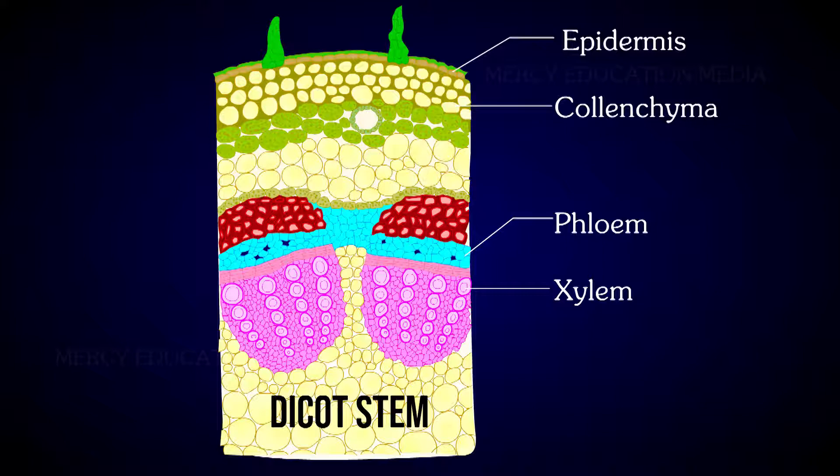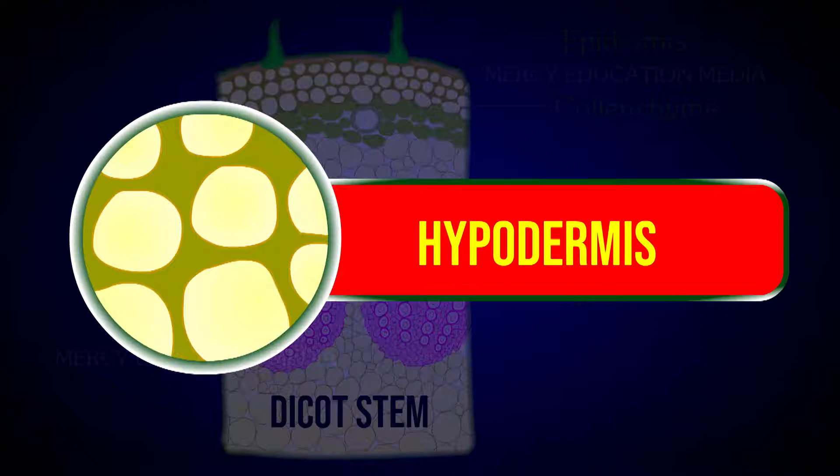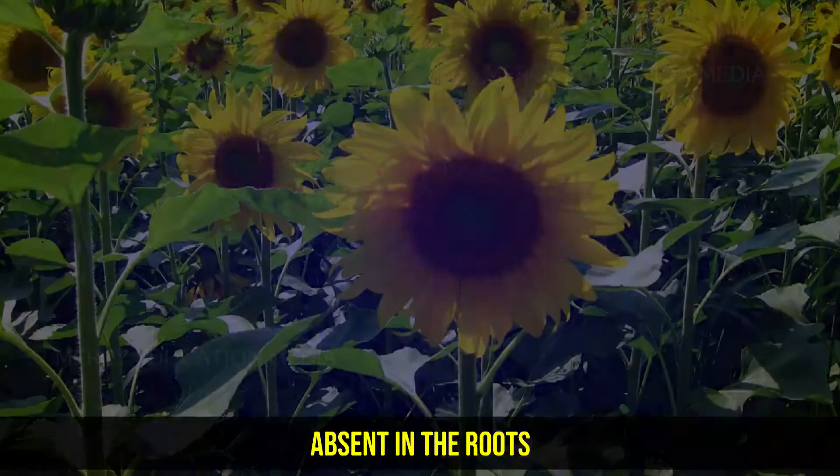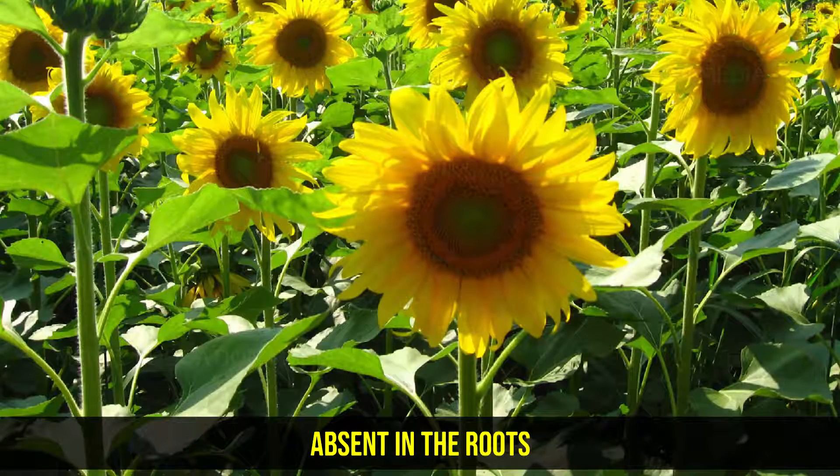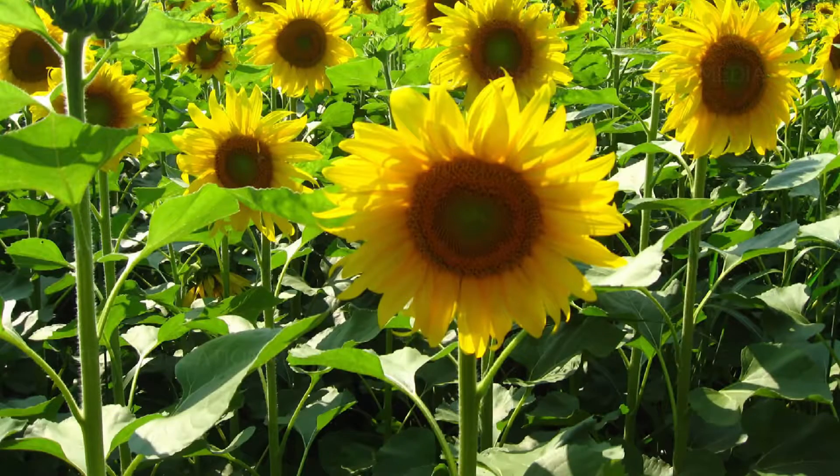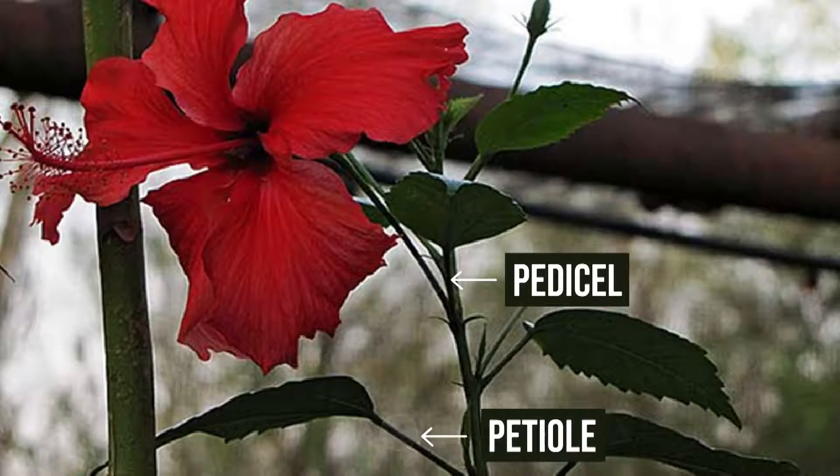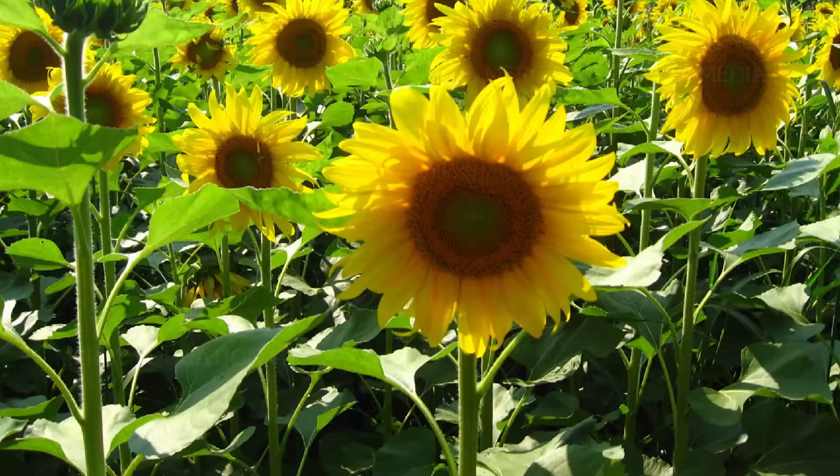Collenchyma generally occurs in the dicot stems in two or more layers below the epidermis. These layers constitute the hypodermis. It is absent in the roots of land plants. It also occurs in petiole and pedicel. It gives strength to young organs.